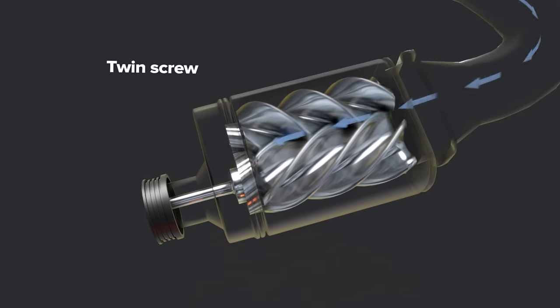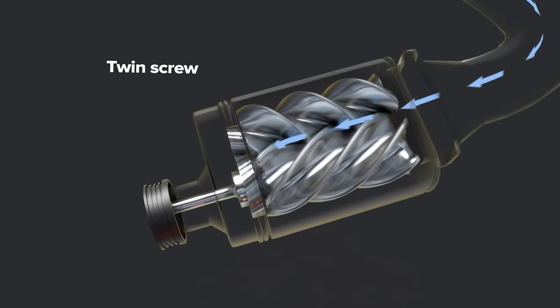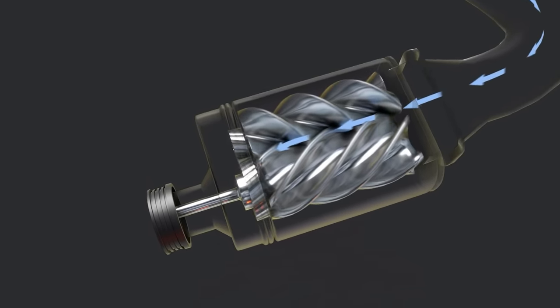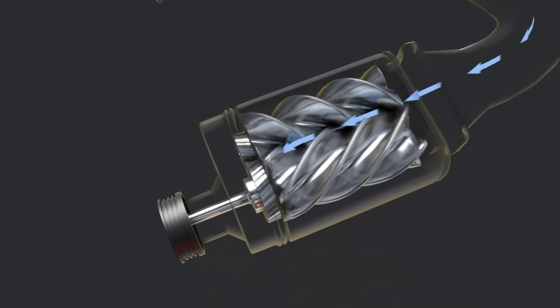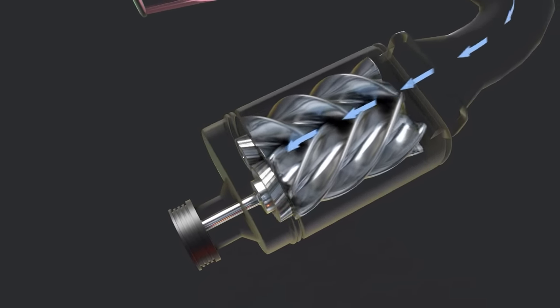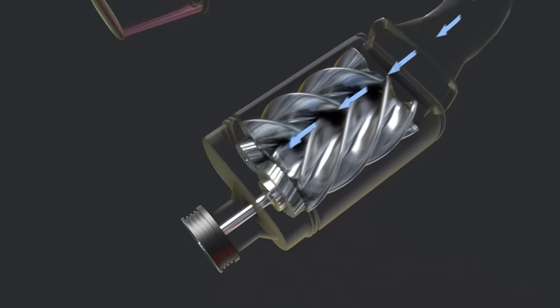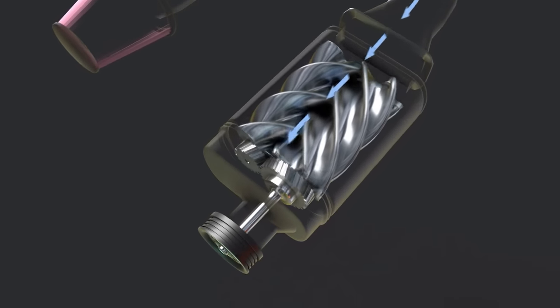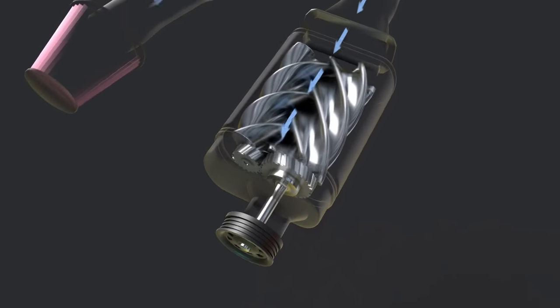Twin screw: Twin screw type superchargers feature complex rotors with intricately designed lobes that compress air as it moves through the unit. This increased complexity results in better performance but also higher manufacturing cost.